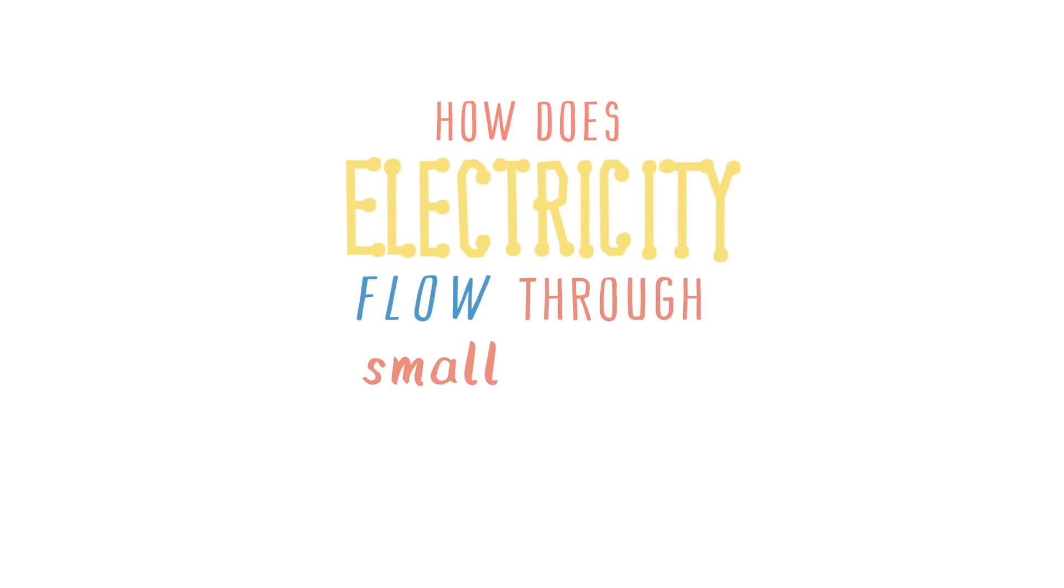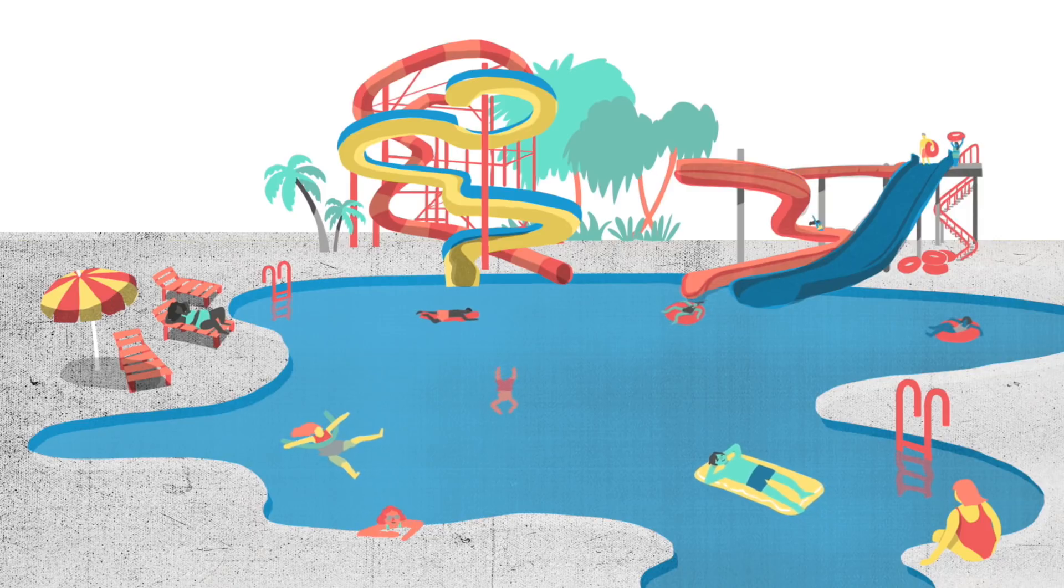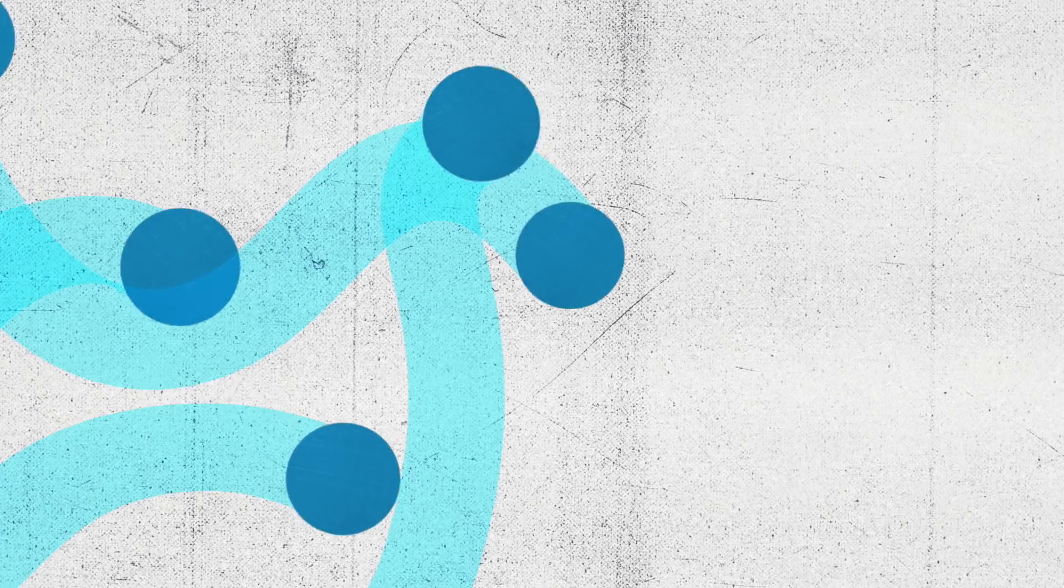When we think of electricity flowing through conductive material, we might picture it like water flowing through a pipe. Here, water consists of many particles, and the larger the pipe, the more the particles can flow, and the more pathways they can take on their journey from one end to the other.